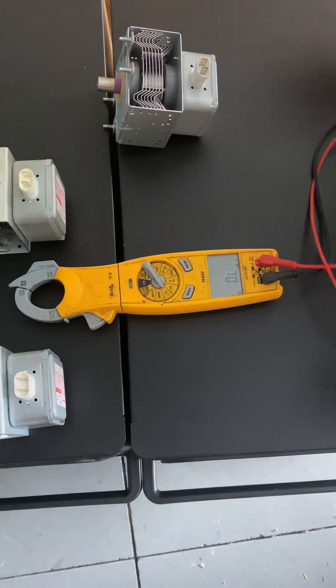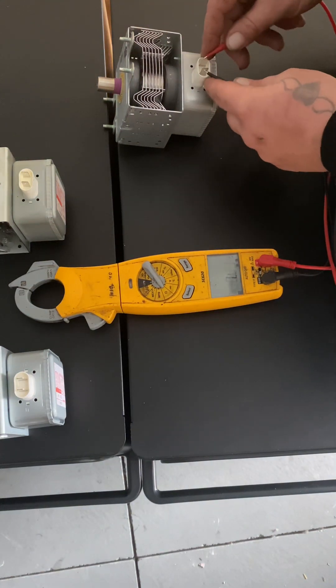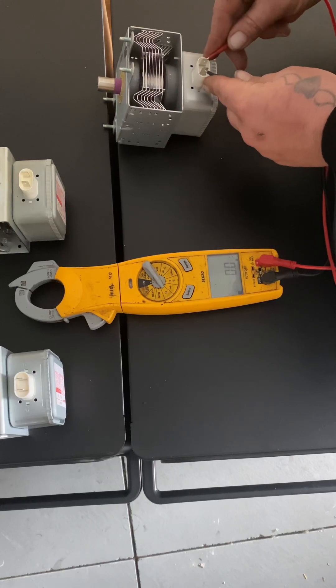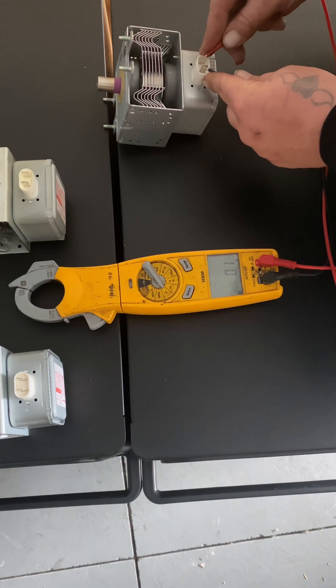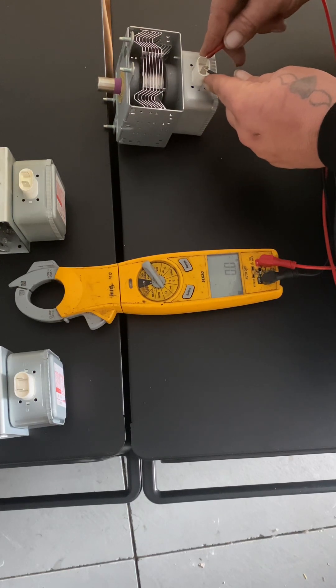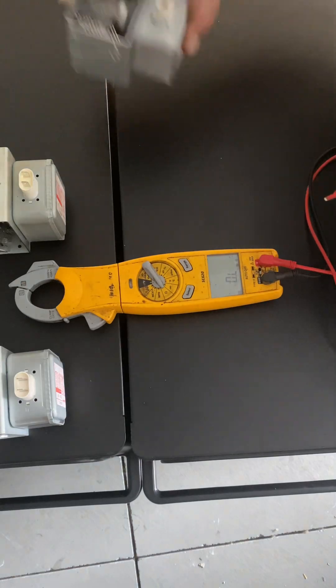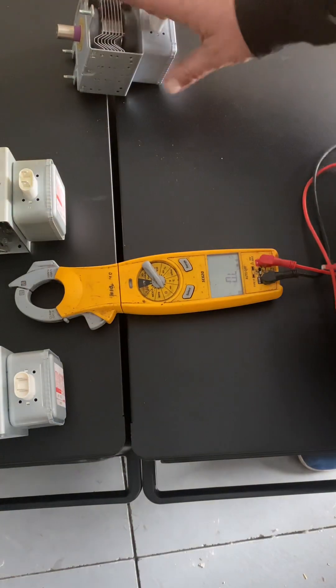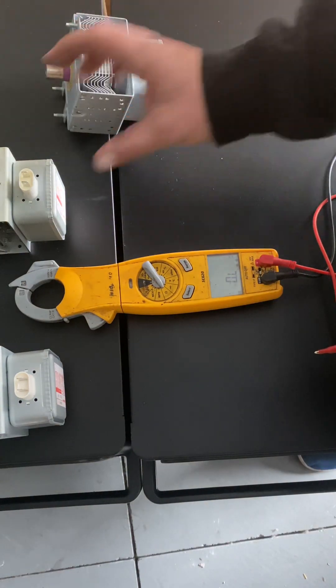You want to check on ohms. Same test, go across the terminals. Should have a reading between 0.0 and 0.1. That indicates a good magnetron. This is a brand new magnetron right here.